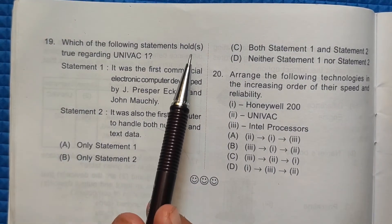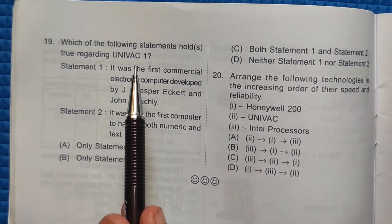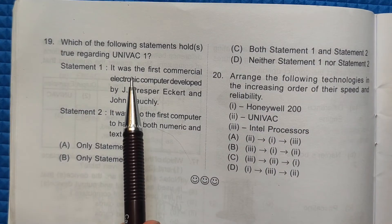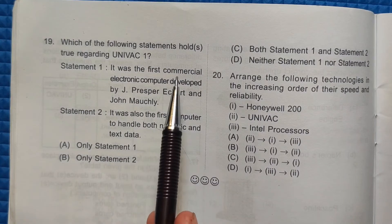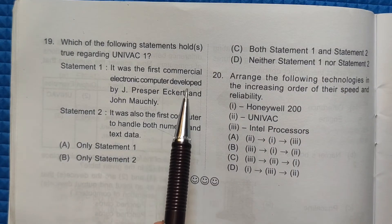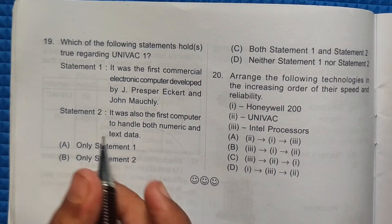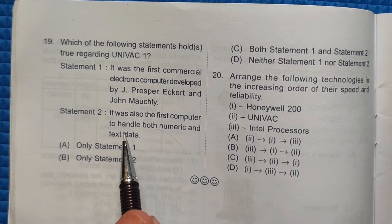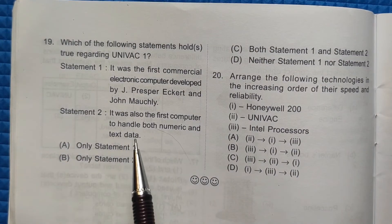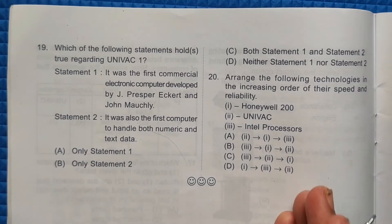Nineteenth question: which of the following statements holds true regarding UNIVAC 1? UNIVAC stands for Universal Automatic Computer. Statement one: it was the first commercial electronic computer developed by J. Presper Eckert and John Mauchly — correct. Statement two: it was also the first computer to handle both numeric and text data — also correct. The correct answer is option number C: both statement one and statement two.